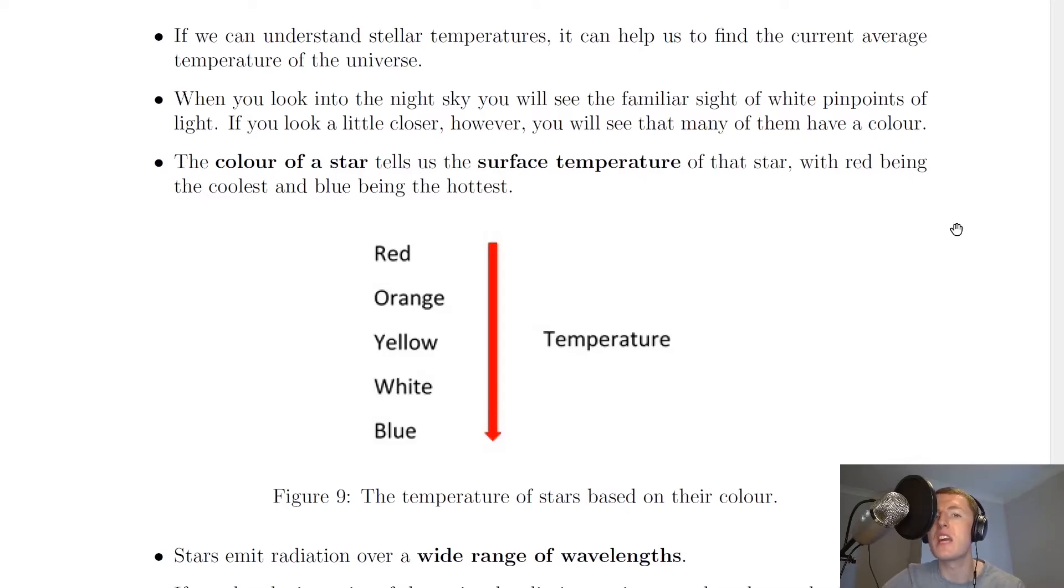Now this goes against the kind of common sense way of thinking, because you probably associate red being a warm colour and blue being a cold colour, but it's the opposite case for stars. So for stars, red is actually the coolest star and blue is actually the hottest star.